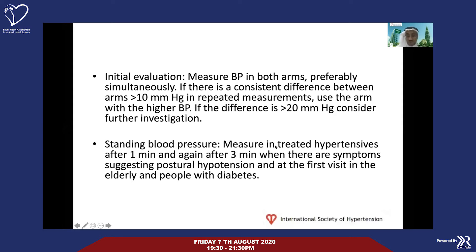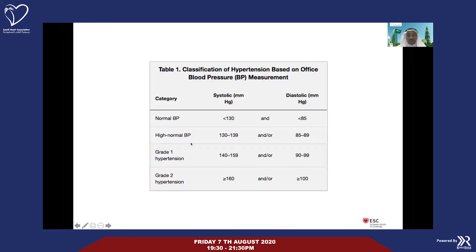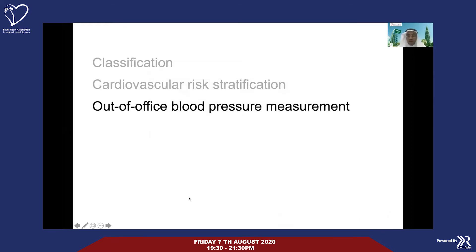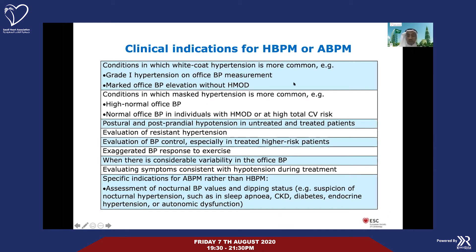If you suspect a postural drop, please repeat blood pressure at one minute and three minutes after standing — especially in the elderly, diabetics, and those with symptoms, because they are prone to complications of orthostatic hypotension. The classification remains the same standard, putting patients into high normal, grade one, and grade two. The emphasis on out-of-office and home blood pressure measurement continues.